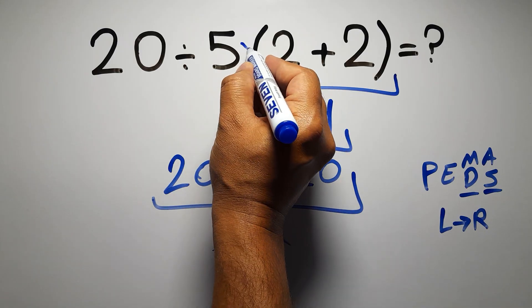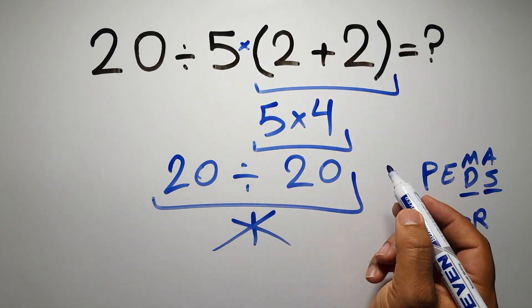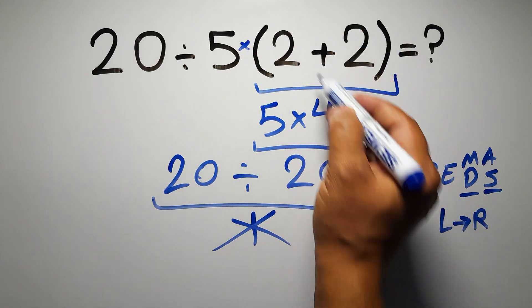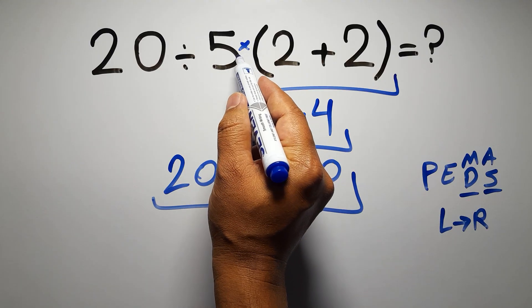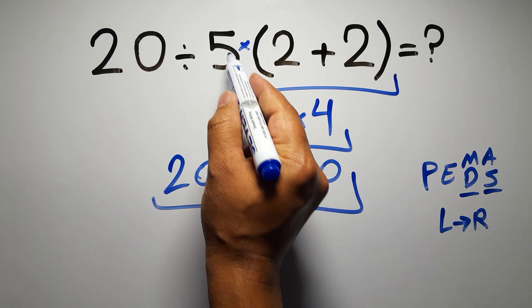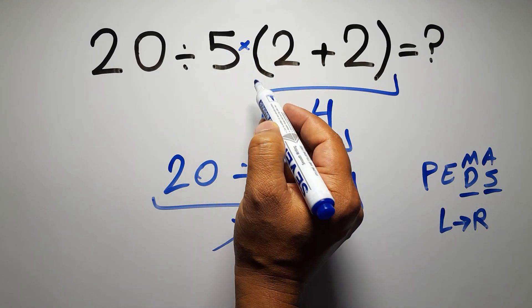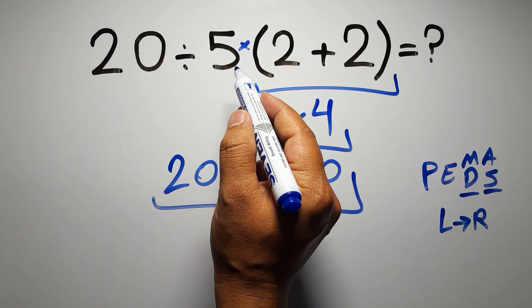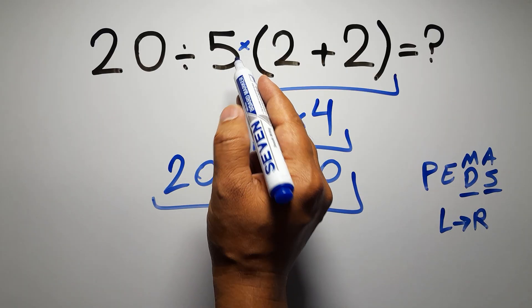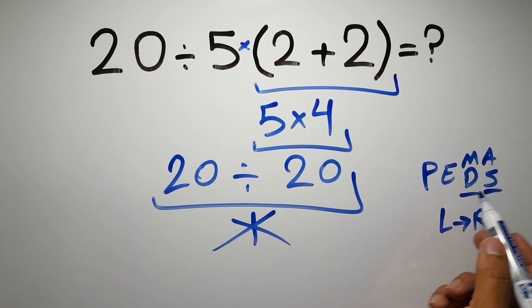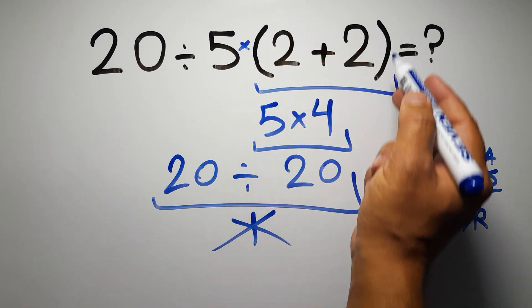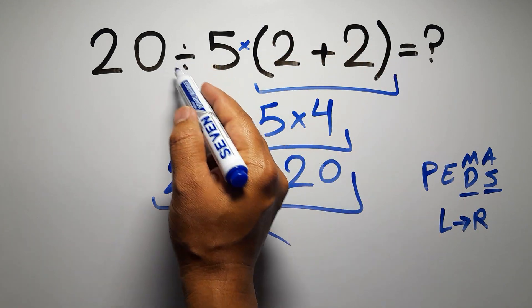one division, one multiplication, and one parentheses. Inside this parentheses we have one addition. Here we have a multiplication because in mathematics when a number is placed next to parentheses it means multiplication, and we usually don't write the multiplication sign for brevity. Okay, so according to PEMDAS, first we have to do this parentheses, then this division